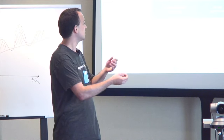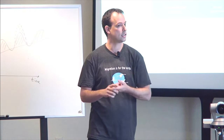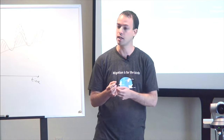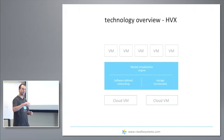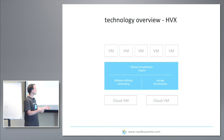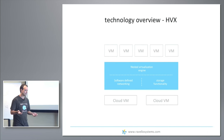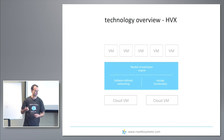HVX couples a nested virtualization engine for compute, software-defined networking which allows us to build any L2 network in any cloud together with a few L3 services, and storage functionality which lets you not worry about how you access your disks in a public cloud. We're completely cloud-agnostic — southbound we're cloud-agnostic and northbound you can run any VM on top of us. Kind of like a universal adapter.